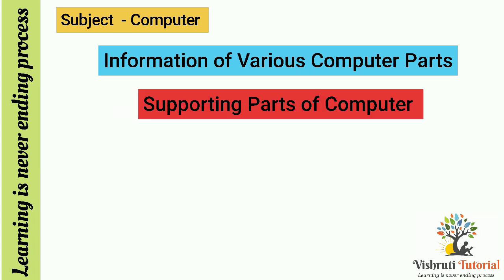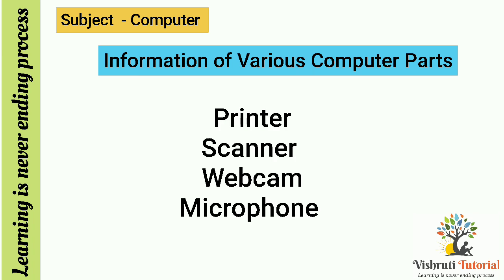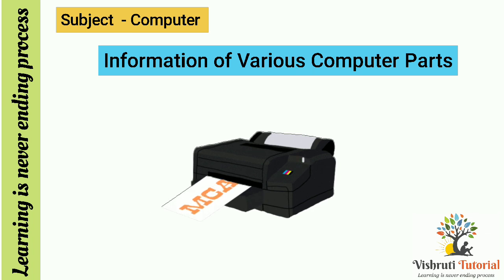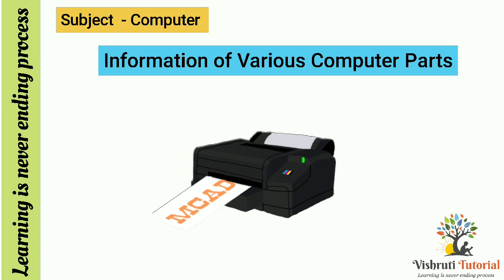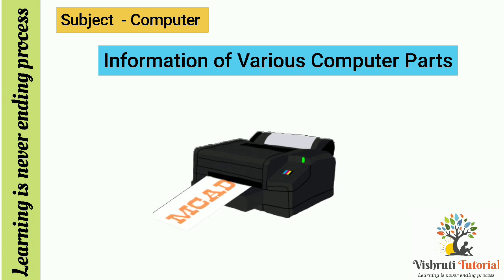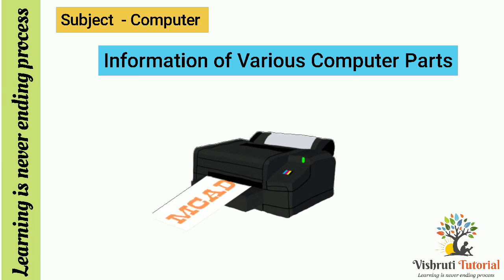Now, in other supporting parts, we are talking about printer, scanner, web camera, and microphone. Can you name this? Yes, this is a printer. A printer is a machine which makes representations of graphics or text, usually on paper. Barcode printers are an example of an expanded use of printers. The different types of printers include 3D printer, inkjet printer, laser printer, and thermal printer.